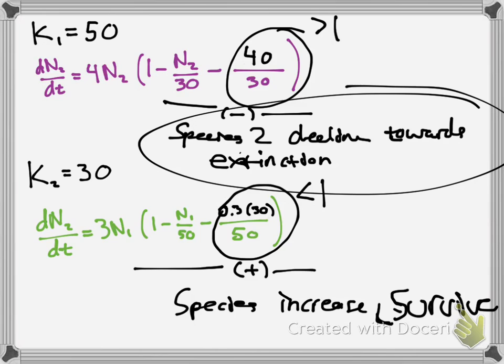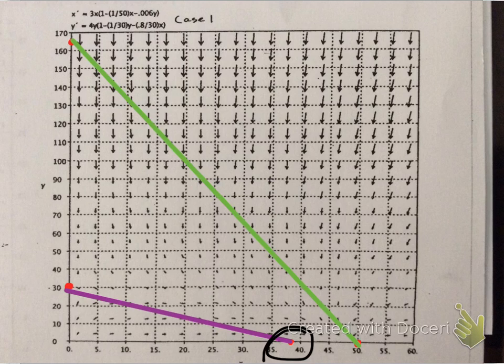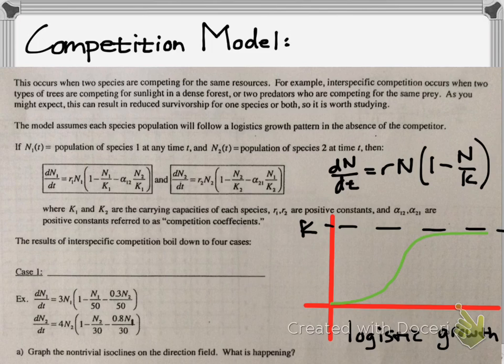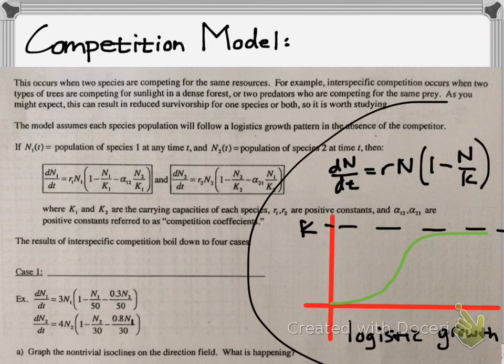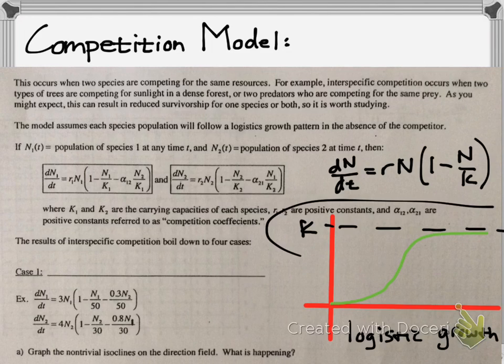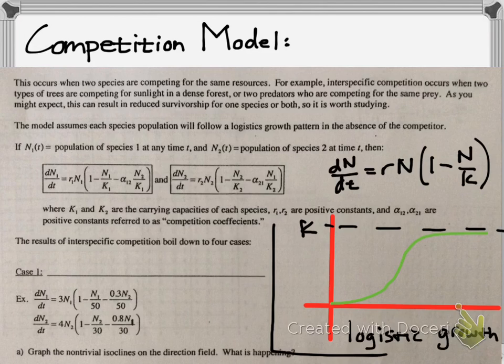So yeah, that is the applications of systems of differential equations involving rates and population for competition of a resource. So I hope that helped. And remember that it all goes back to the basic concepts of logistic growth, carrying capacity, and simply using what you know from this basic graph to figure out which species will survive longer over time. Good luck and keep studying.